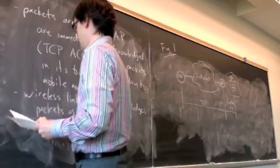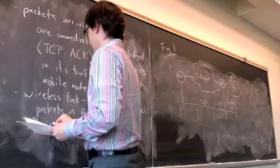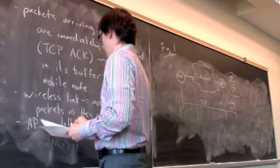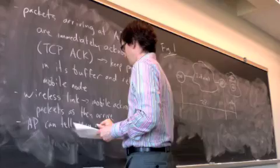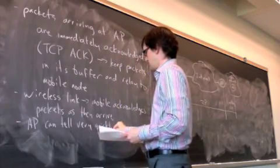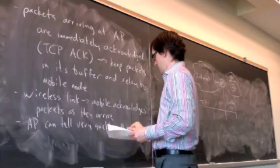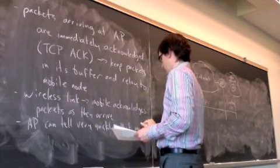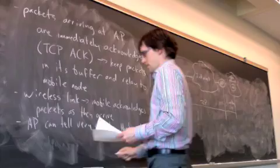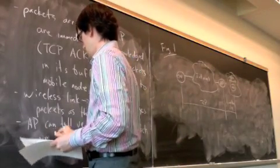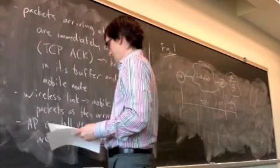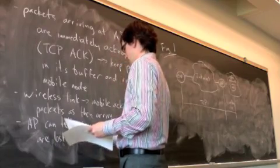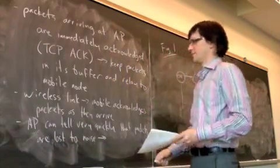So the access point can tell very quickly that packets are lost in noise, and it will just retransmit them from the buffer.